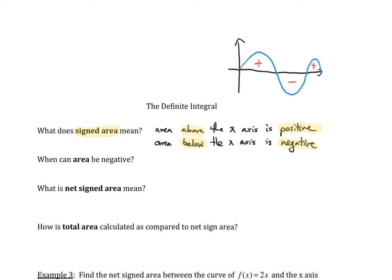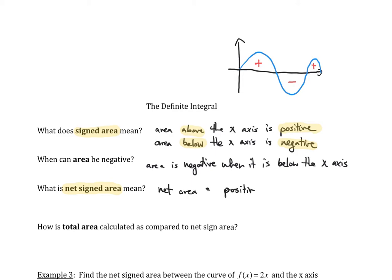So when can area be negative? I think we just answered that. Area is negative when it is below the x-axis. Net signed area — what does that mean? That basically means the net area is going to be equal to the positive area minus the negative area.